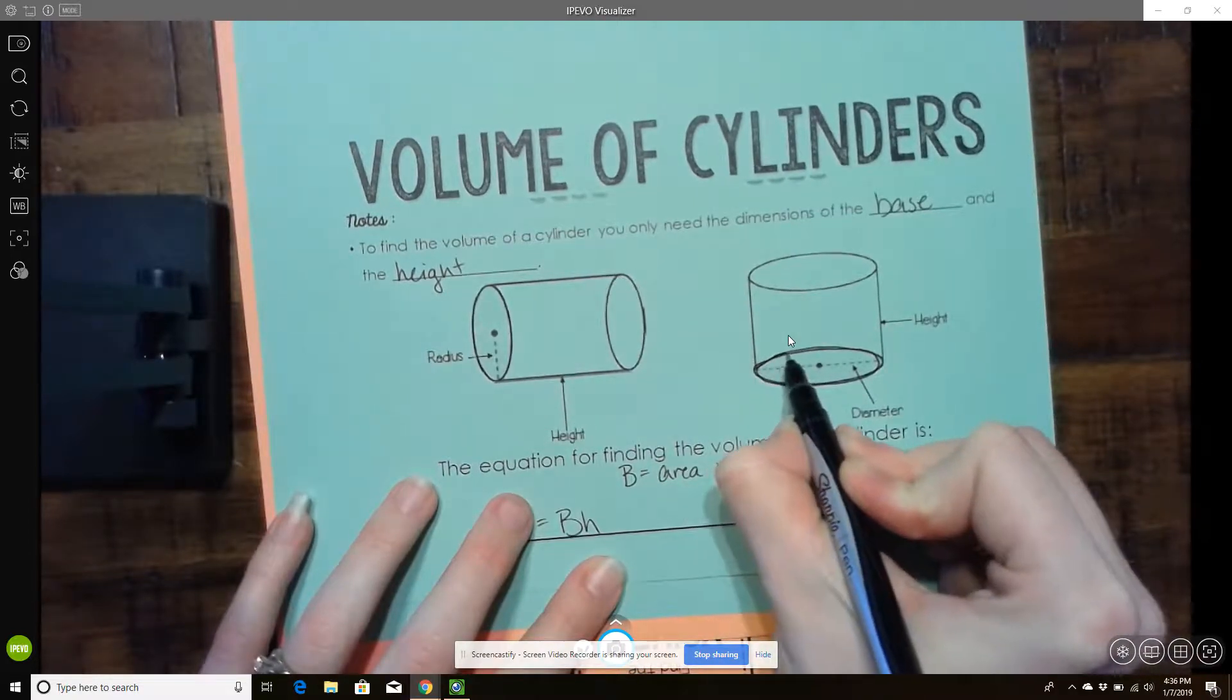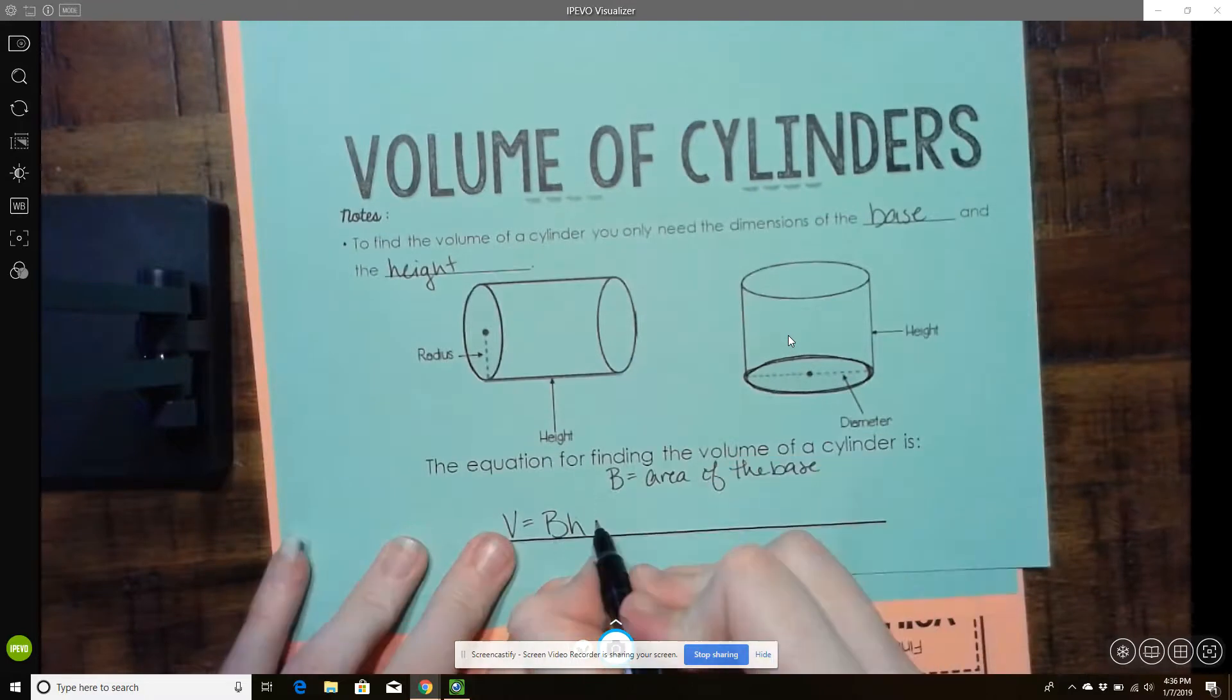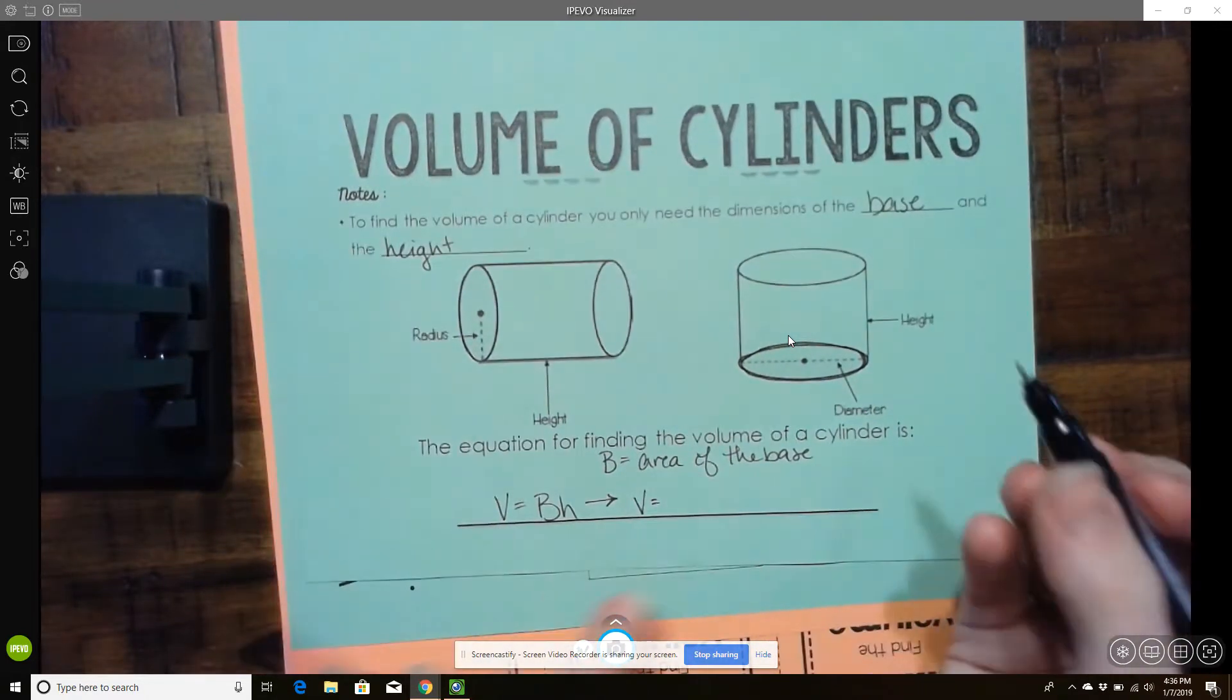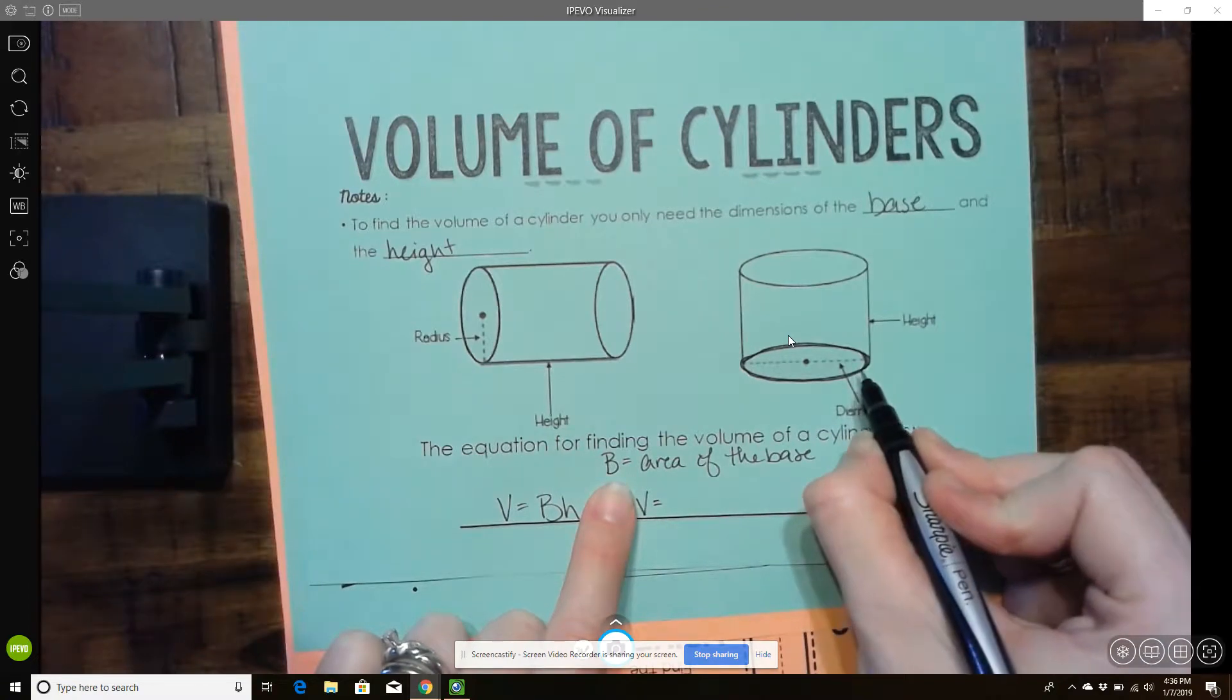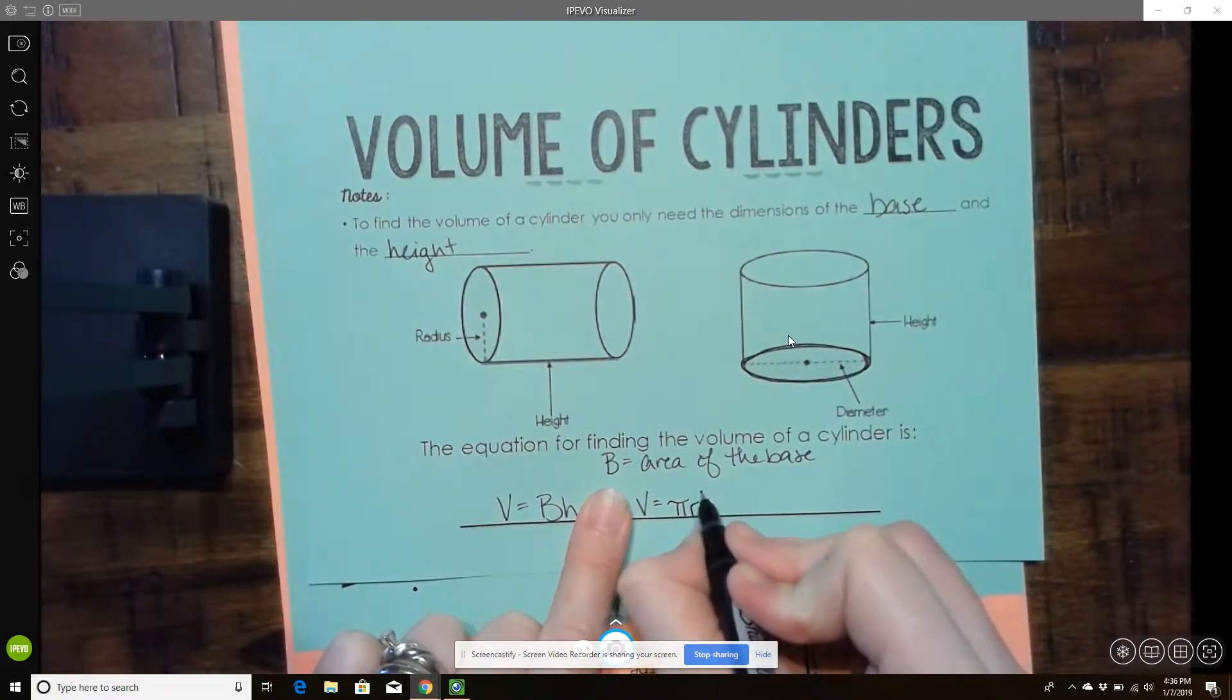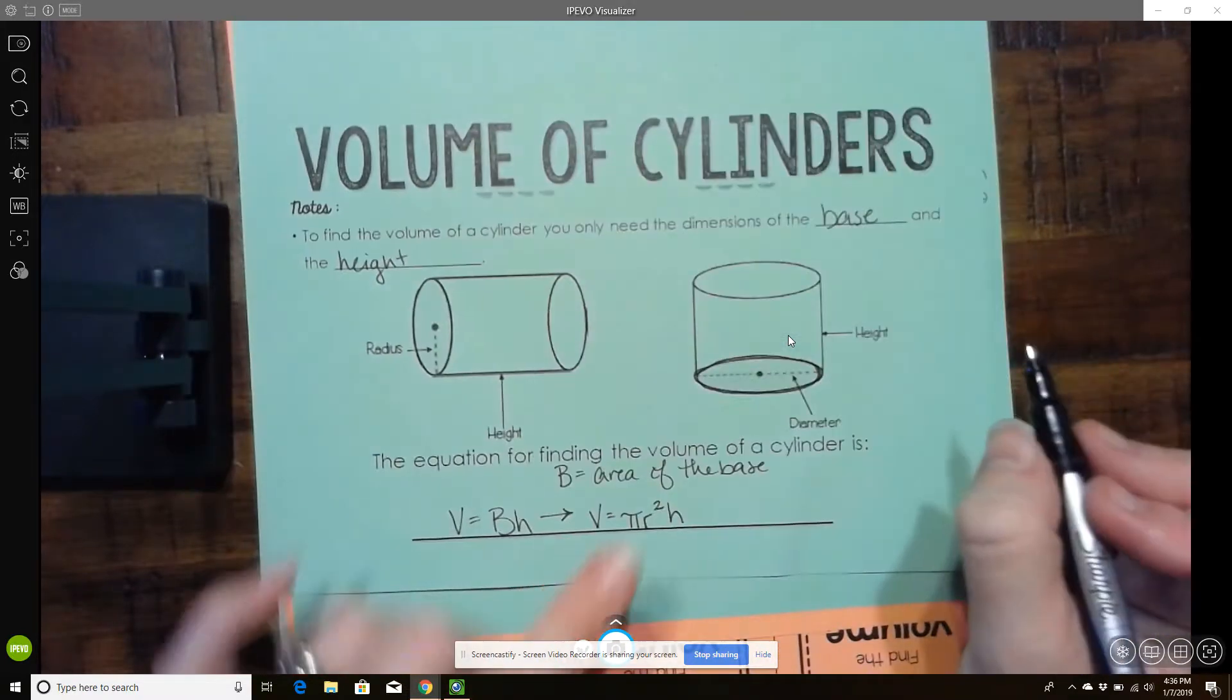So shapes are named by their base. So if it's a cylinder, it's going to have a circular bottom. So I can rewrite this equation as volume equals, so the area of the base and the area of a circle is pi r squared, and then I still have to multiply by the height of the figure.